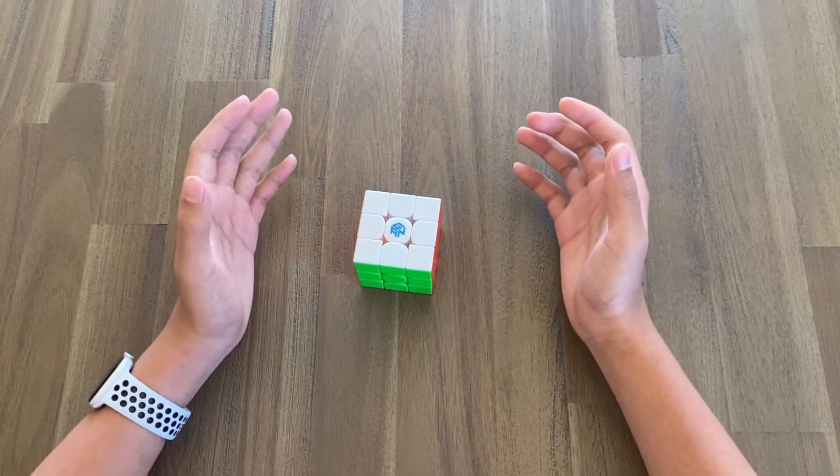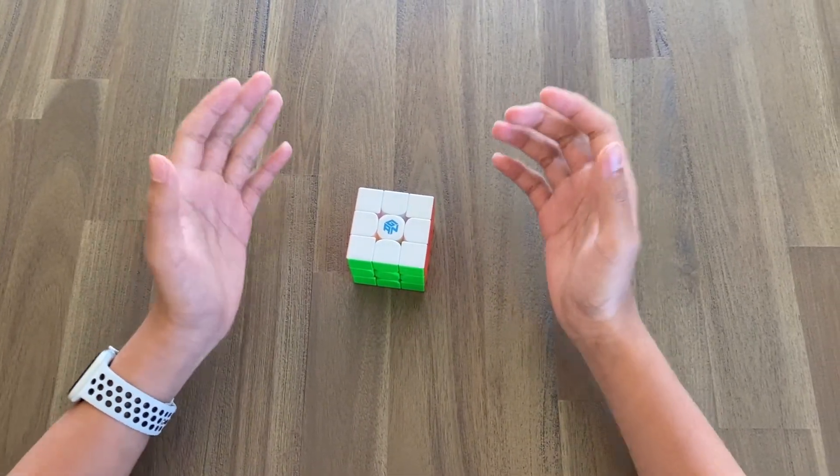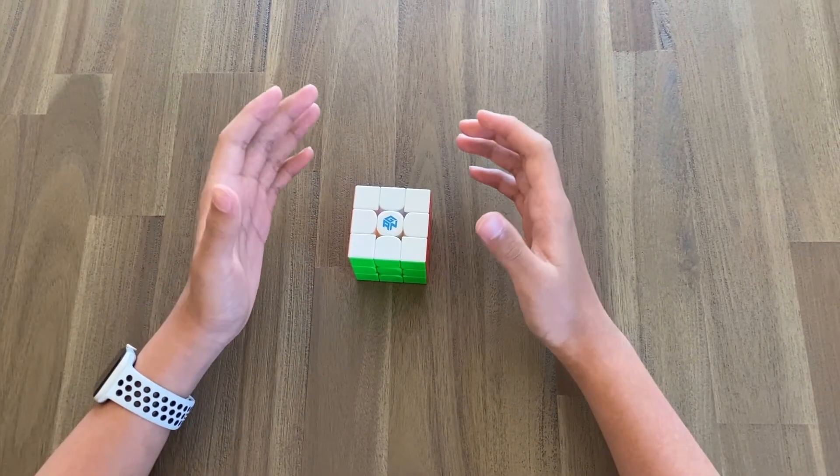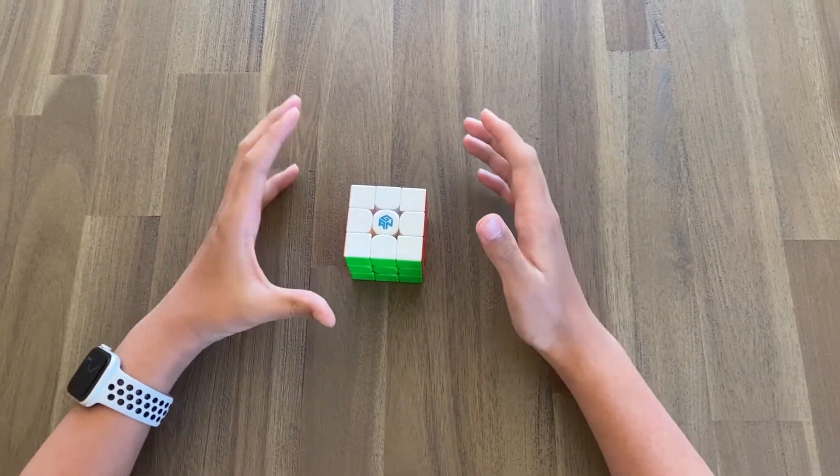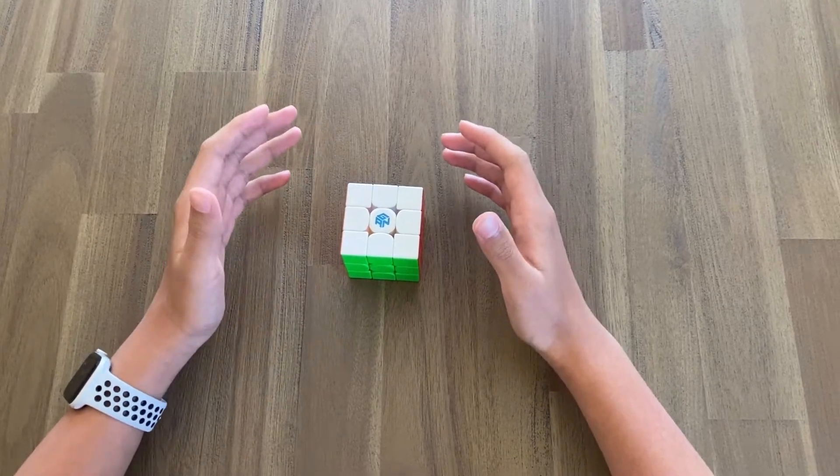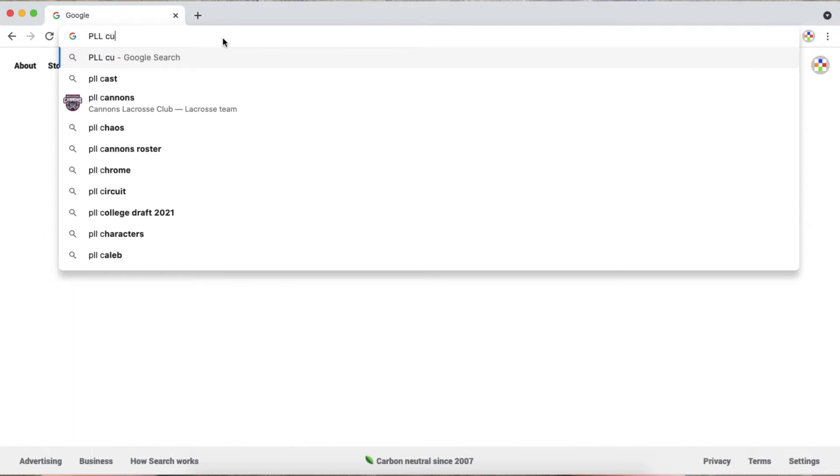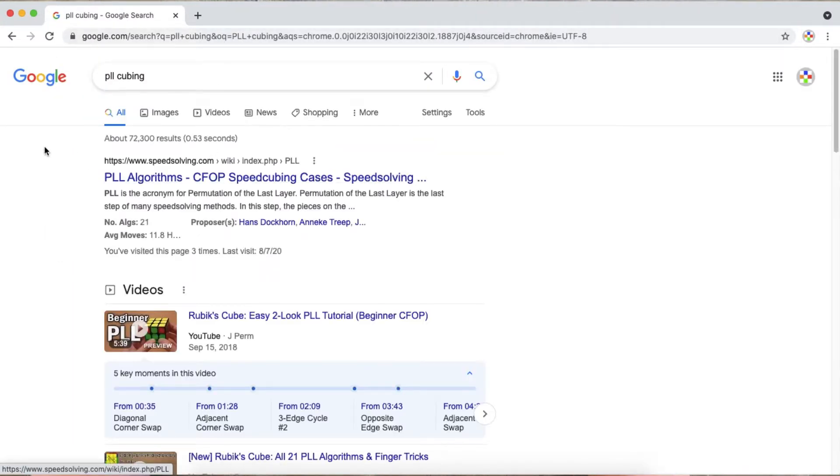Hey guys, welcome back to another video. Today we're going to be talking about how to do two-look PLL. So first let's talk about what two-look PLL is, but first you need to know what PLL is. Basically, you can solve the top ring around the cube in one algorithm.